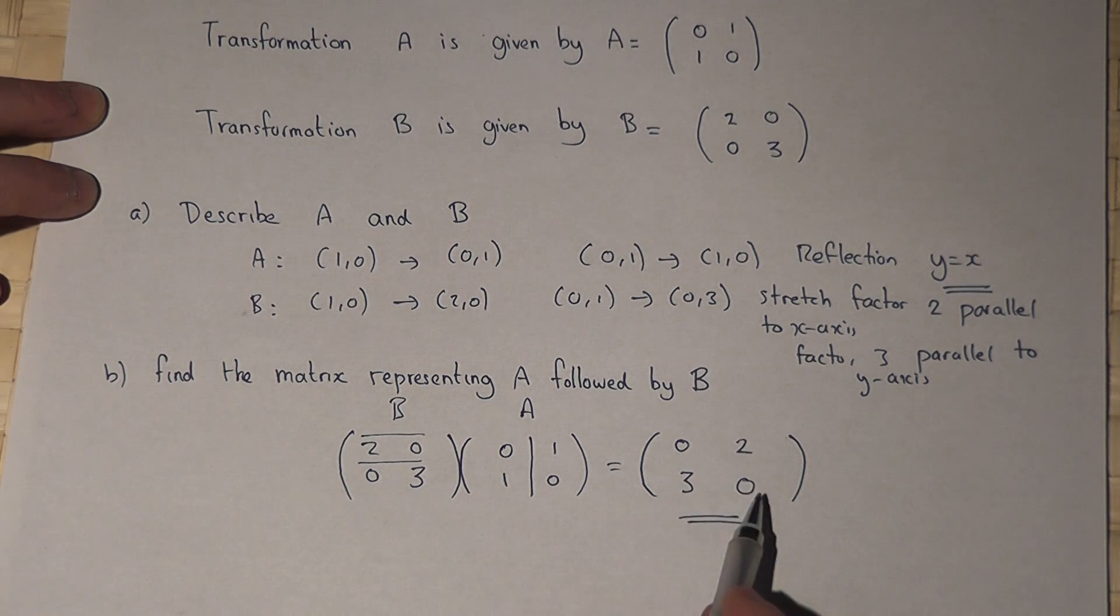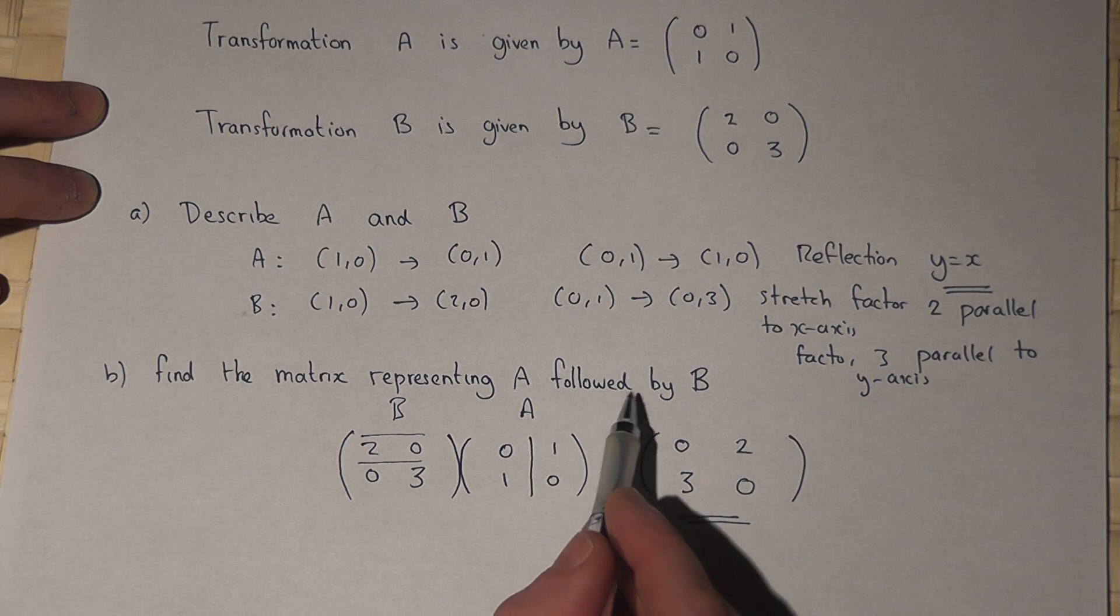0 times 0 plus 3 times 1 is 3, and 0 times 1 and 3 times 0 is 0. So (0,2,3,0) represents the composite matrix of A followed by B.